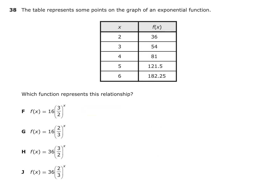Number 38 is an exponential function, and you're given a table with some points for the graph. Notice that the value of f(x) or y is increasing. If you have an increasing exponential function, that means b is greater than 1, where you have a times b to the x. So b has to be greater than 1 — that's the multiplier inside the parentheses. This option has 2/3, so it can't be G. This one, J, is also 2/3, so it can't be that one. So it's either F or H.